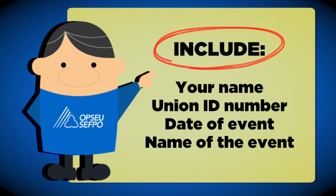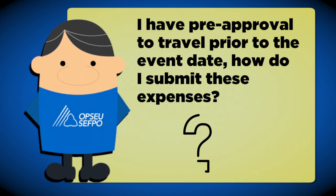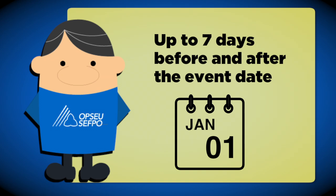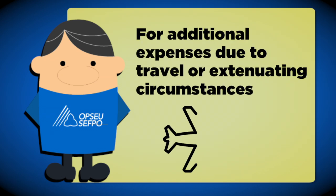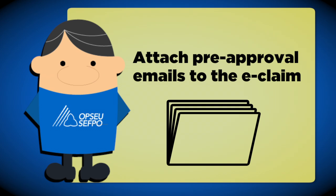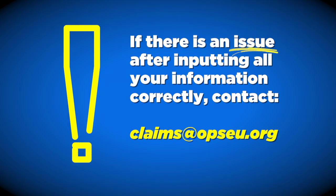If you have pre-approval to travel prior to the event date, you are able to submit expenses for up to seven days before and after the event date to cover additional expenses incurred due to travel or extenuating circumstances. Please attach pre-approval emails to the e-claim for full reimbursement.